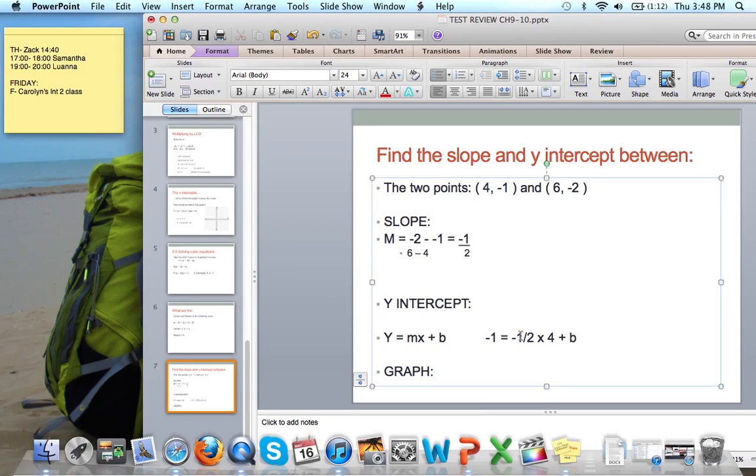From there, we can solve for b. So negative 1 half times 4 is negative 2. So we get negative 1 equals negative 2 plus b. Add the 2 over. We get b equals 1. And our equation would then be y equals negative 1 half x plus 1.